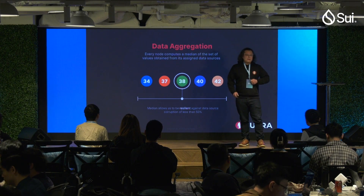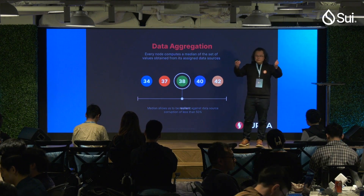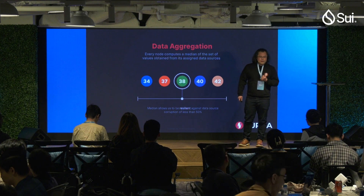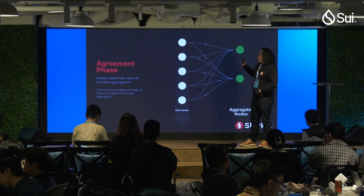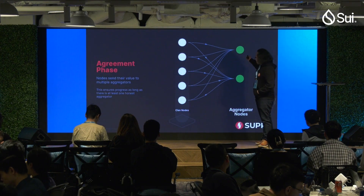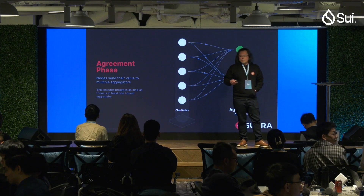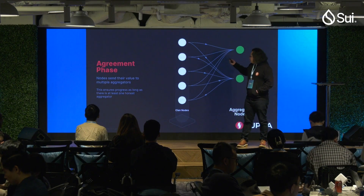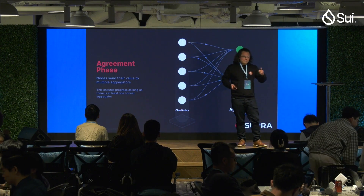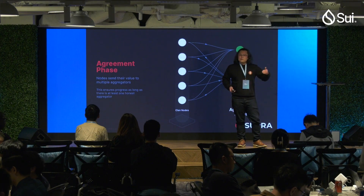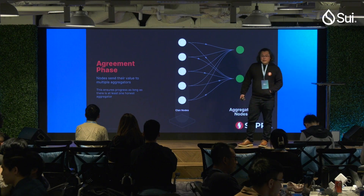If I'm a node and I'm assigned, say, seven out of 20 data sources, I'll wait for the responses and then find the median value — the middle value — and submit it to the aggregators. We have multiple aggregators to ensure better liveness. If you have a single aggregator and that node is Byzantine, offline, or crashed, the protocol pauses. By having multiple aggregators, you have more robustness and better liveness.